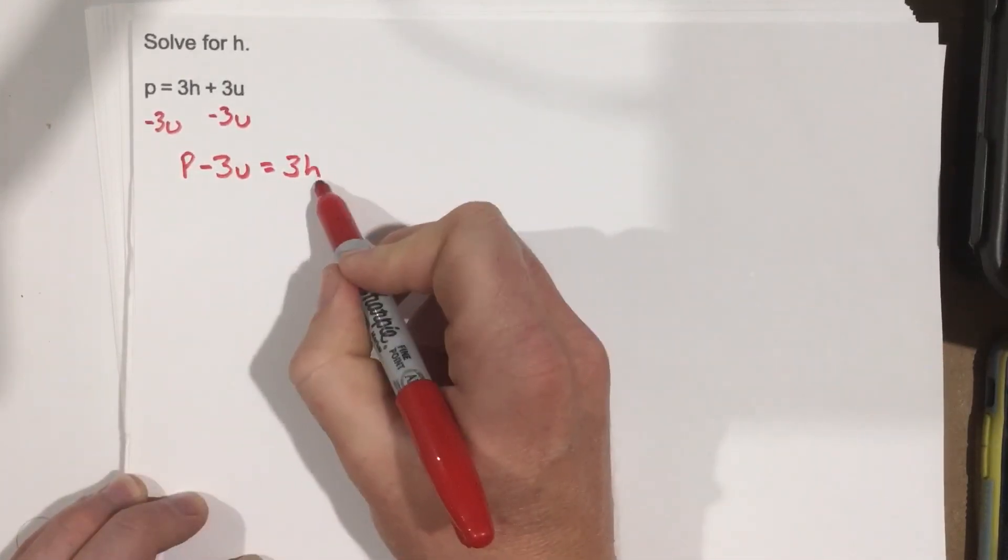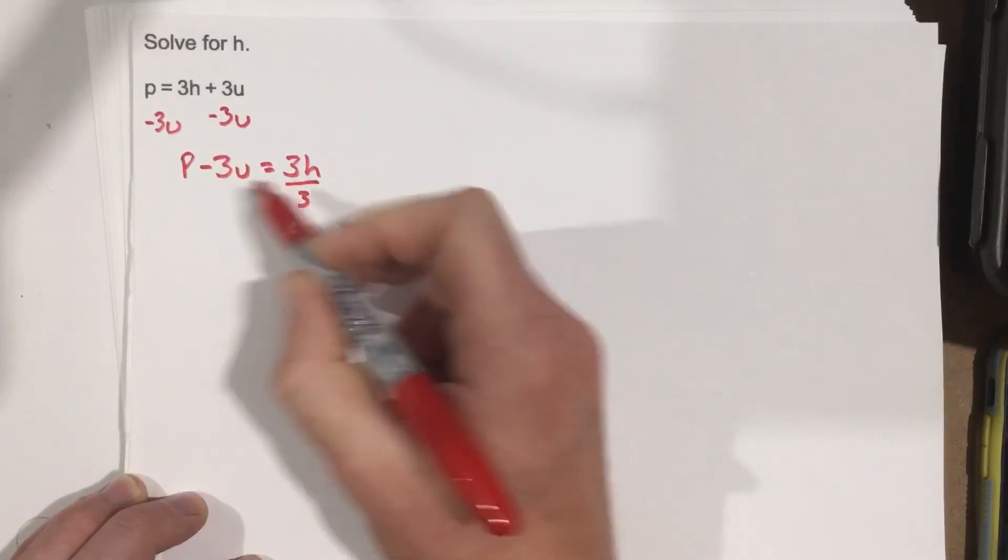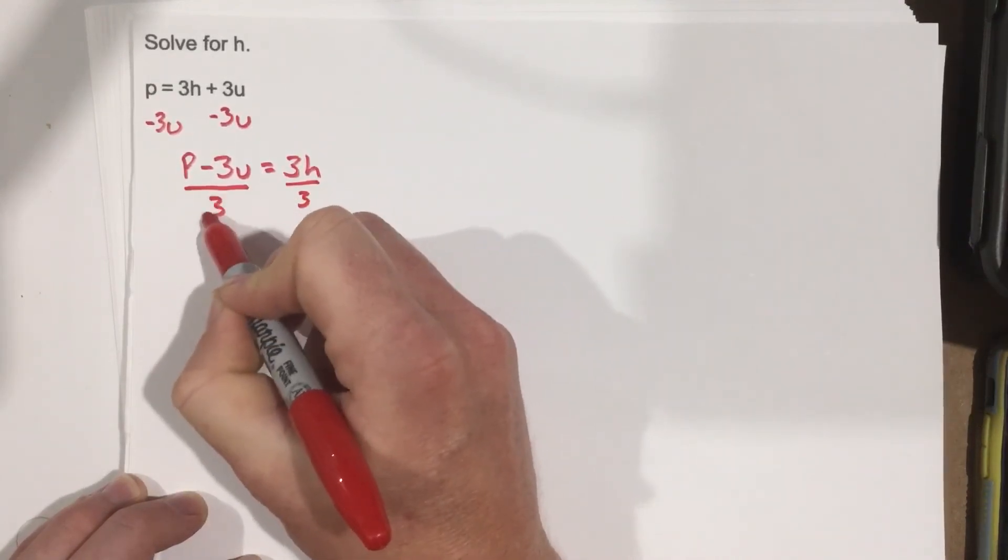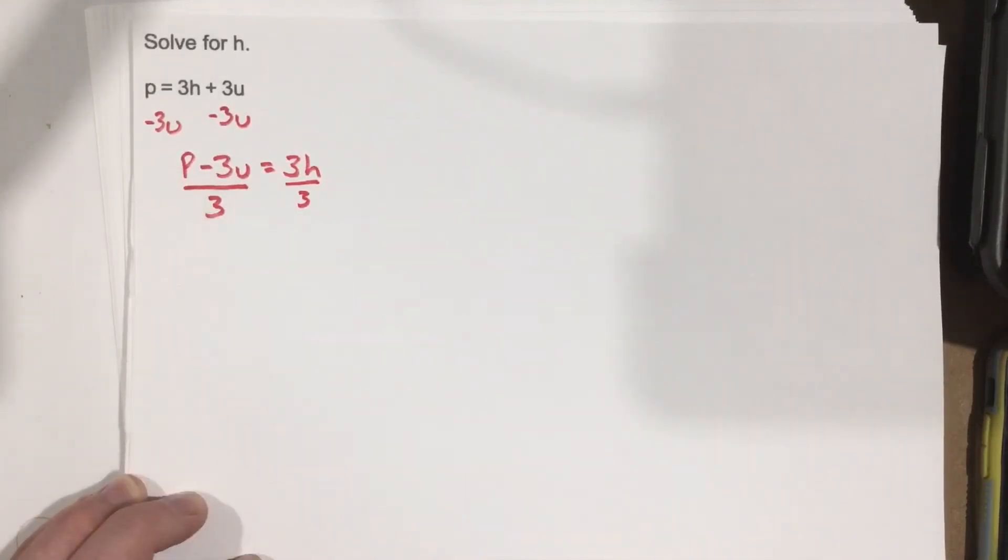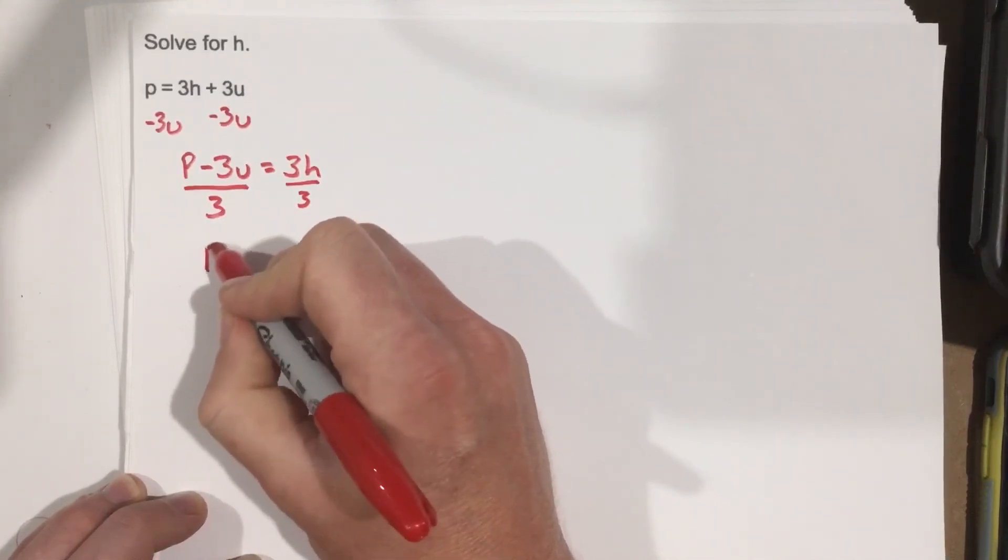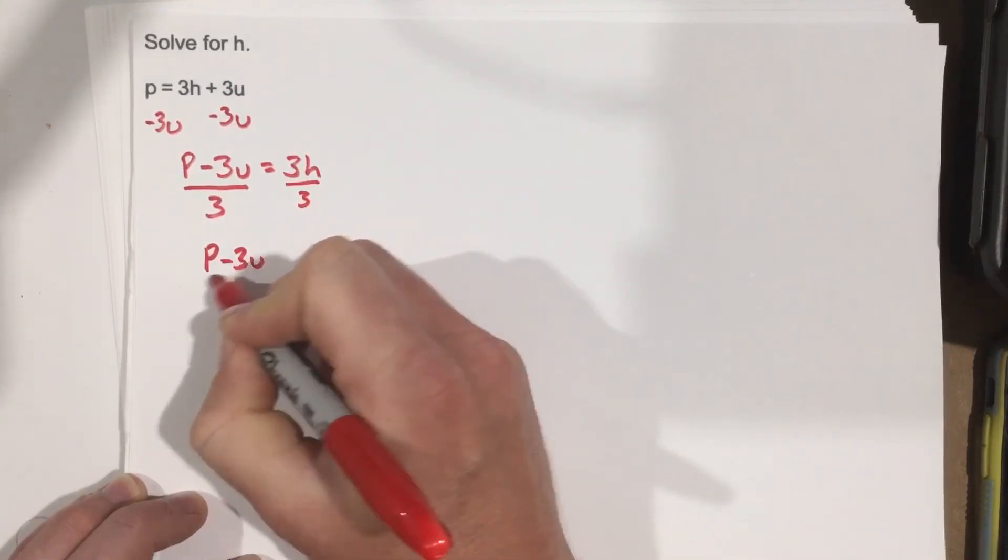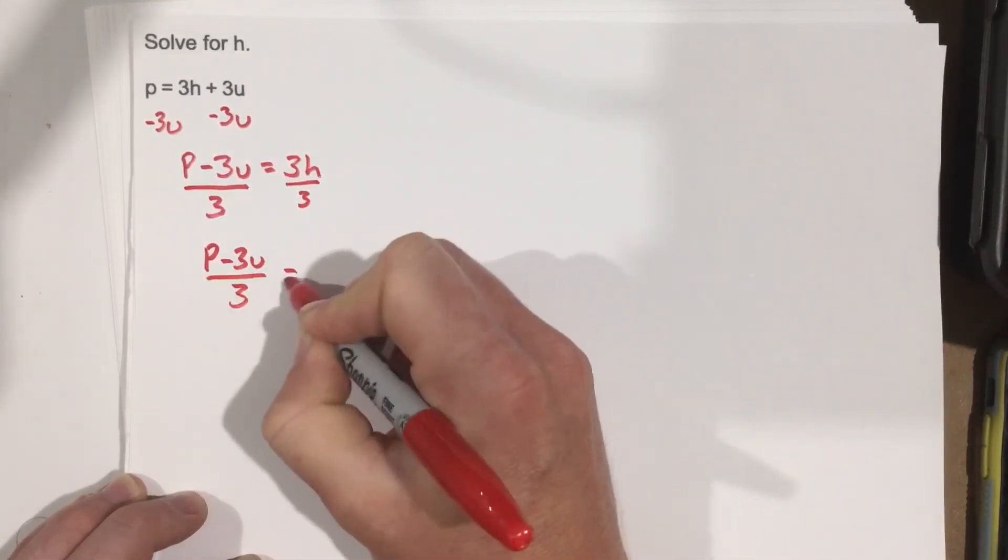Now let's divide by 3 on each side, so we'll divide by 3 here. That'll cancel the 3. Divide by 3 here. Nothing to cancel there. We'll just leave it as p minus 3u divided by 3 equals h.